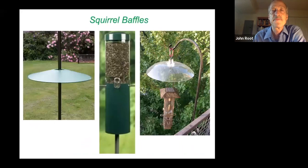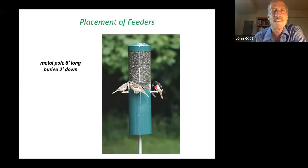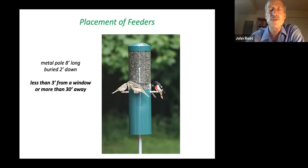If the pole is about eight feet long, buried two feet down, it'll be about the right height — six feet up. Less than three feet from a window or more than 30 feet away — that's the three/thirty rule. If it's close to a window, as close as three feet, that's okay for bird safety, because even if a bird is startled and flies towards the house, it won't have built up enough speed so that striking the window will be serious. But if it's 10 or 15 feet away, it might fly into a window.